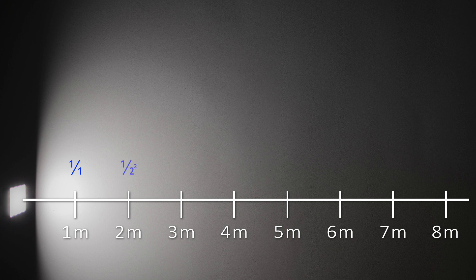At 2 meters away, you get 1 over 2 squared, and 2 squared is 4, so that's a quarter — meaning at 2 meters away, the subject is being lit only a quarter as bright compared to how it was at 1 meter. And at 3 meters, if we run 1 over 3 squared, we get 1 over 9. So the subject at 3 meters is being lit only a ninth as bright relative to its illumination at 1 meter.